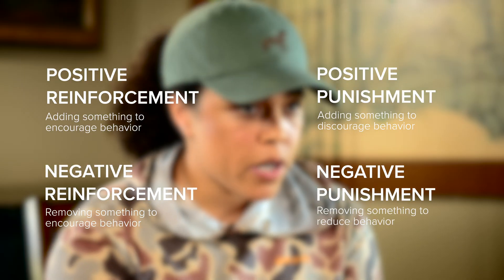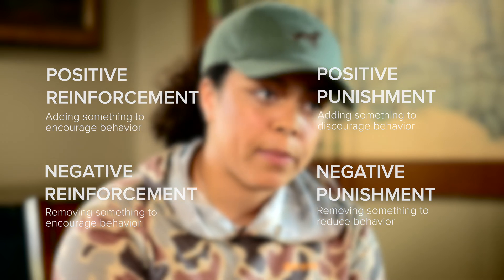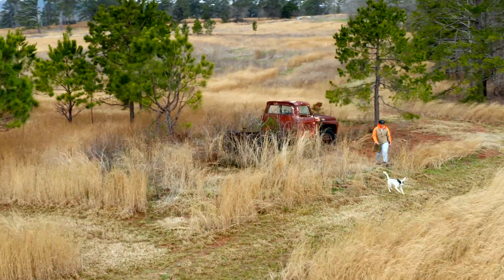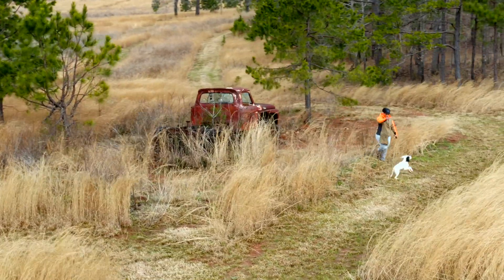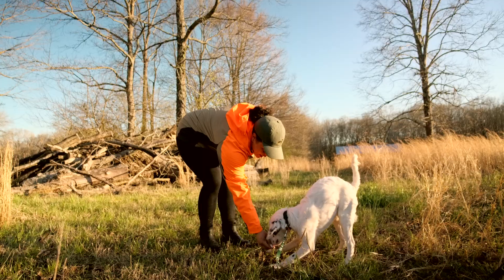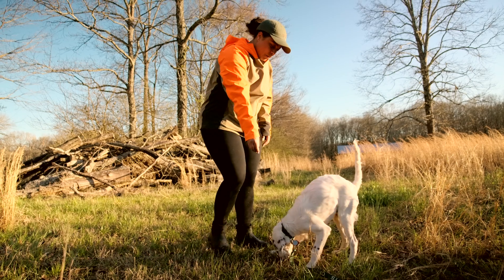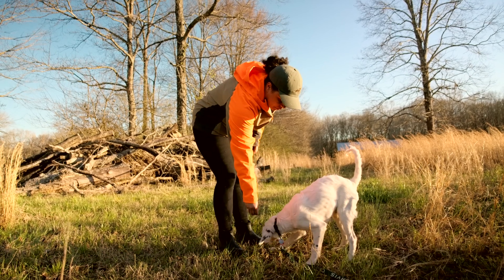No matter what you are doing in your dog training — whether you are a positive reinforcement trainer, traditional trainer, or any other kind of trainer — you are pulling from one of these four quadrants. It is important to understand these four quadrants because no matter what we are doing we are able to adjust. So if we are using positive reinforcement and we aren't getting anywhere, we have three other quadrants we can pull from.